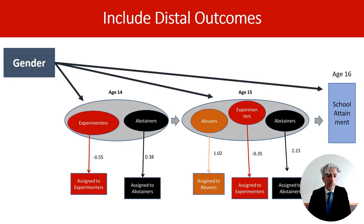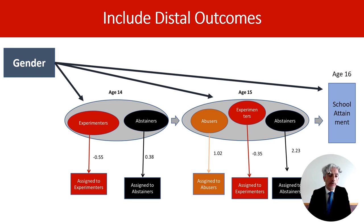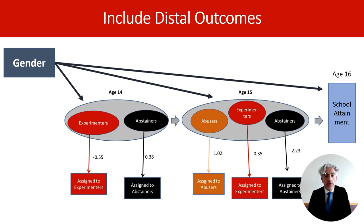Finally, using the three-step approach we can also include distal outcomes while maintaining fixed latent class measurement models that account for uncertainty. For example, we can investigate the association between substance use categories at age 15 and school attainment at age 16, while controlling for covariates like gender — by comparing the adjusted average school attainment across individuals in the three latent classes at age 15.